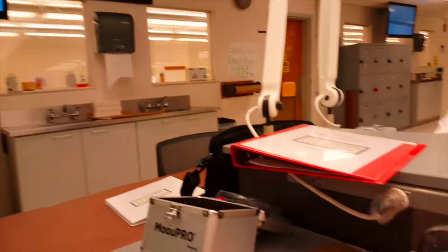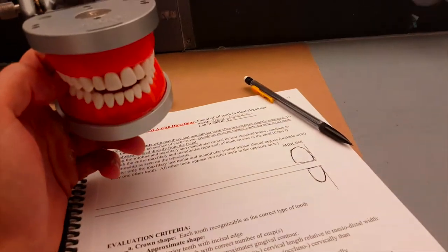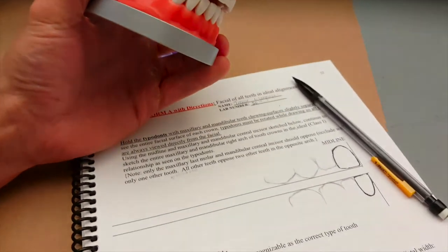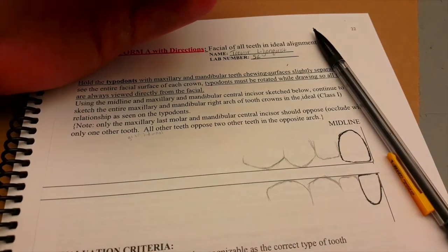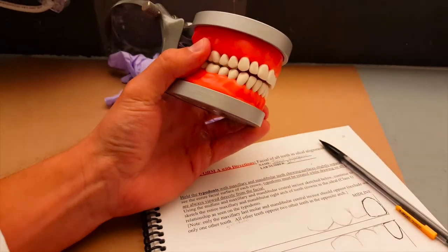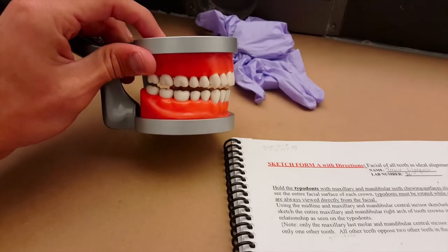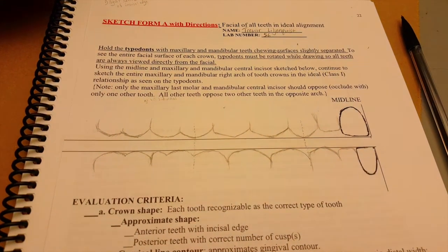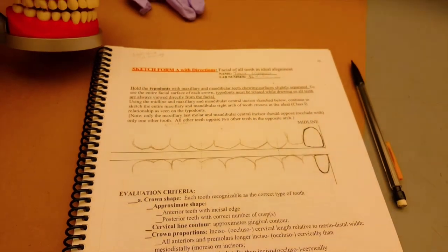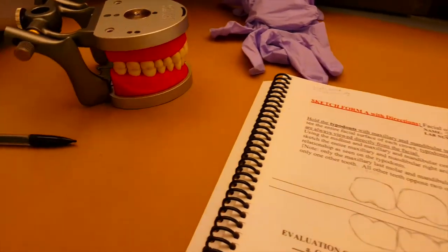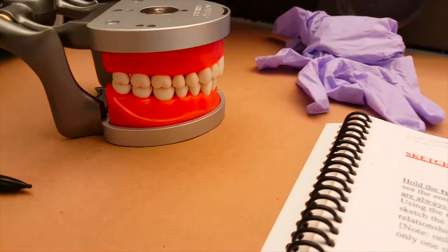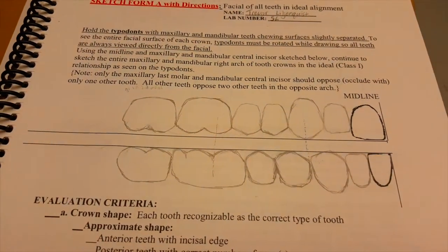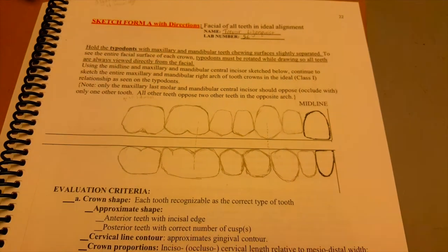So today in class, they had us practice drawing all the teeth with the perfect and correct proportions relative to all the other teeth. So how wide they are, where they line up to the teeth below them or above them, all just free drawn by hand. And they told us that it is going to be part of our final. So I have 15 minutes to do this for real and it's going to take a lot, a lot of practice.